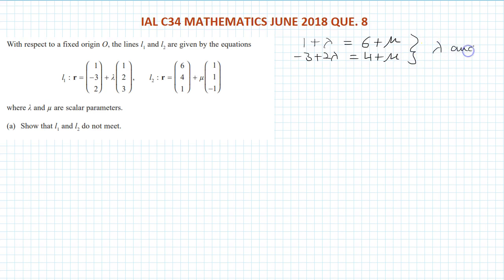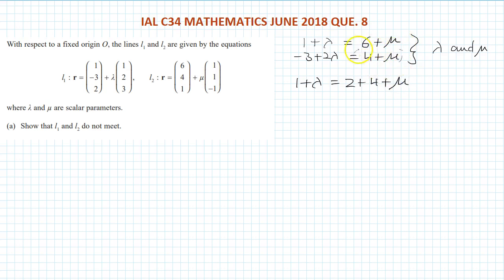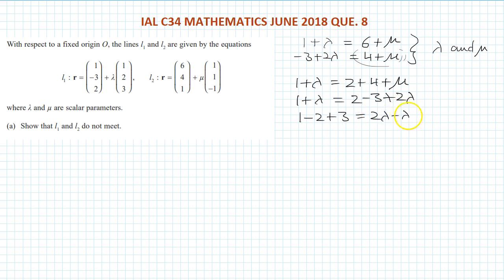Let's find the values of lambda and mu, then substitute into the third equation. If the left-hand side equals the right-hand side, the lines intersect; if not, they don't. From equation one: 1 plus lambda equals 6 plus mu. I can substitute the expression 4 plus mu, rewriting it as 2 plus 4 plus mu, to make calculation easier. This gives 1 plus lambda equals 2 minus 3 plus 2 lambda.